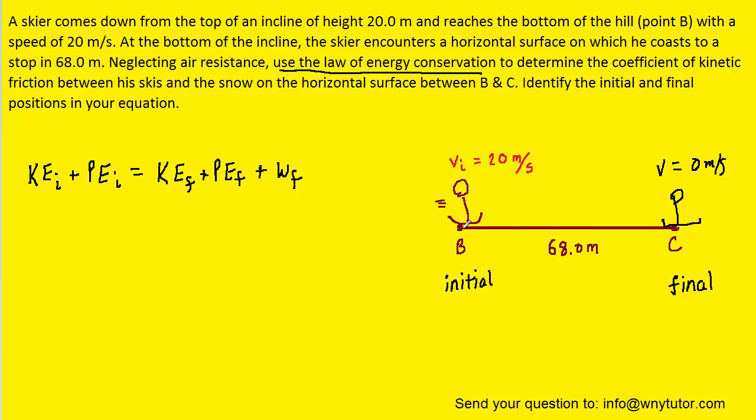Now we'll notice that the skier is moving along a level surface, and therefore the potential energy is not actually changing in this problem. So we can actually eliminate the potential energy terms from this equation. Also, because the final speed of the skier is 0, that means the final kinetic energy will also be 0. So we can remove that, and that simplifies the equation.